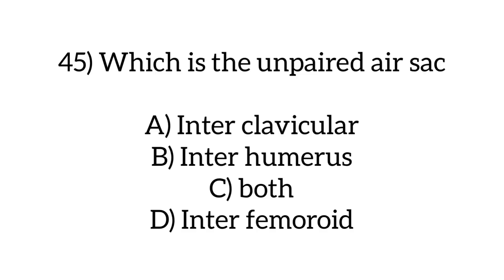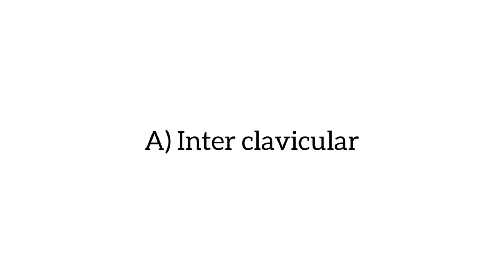Which is the unpaired air sac? Options: in the clavicular, in the humerus, or both in the femoral region. Option A: the clavicular air sac is unpaired.